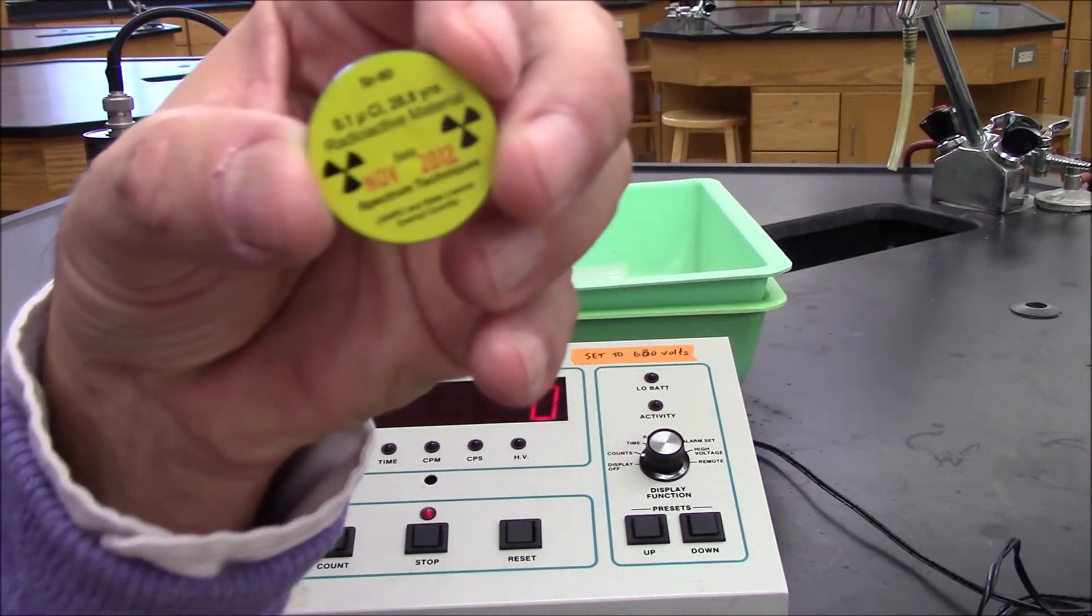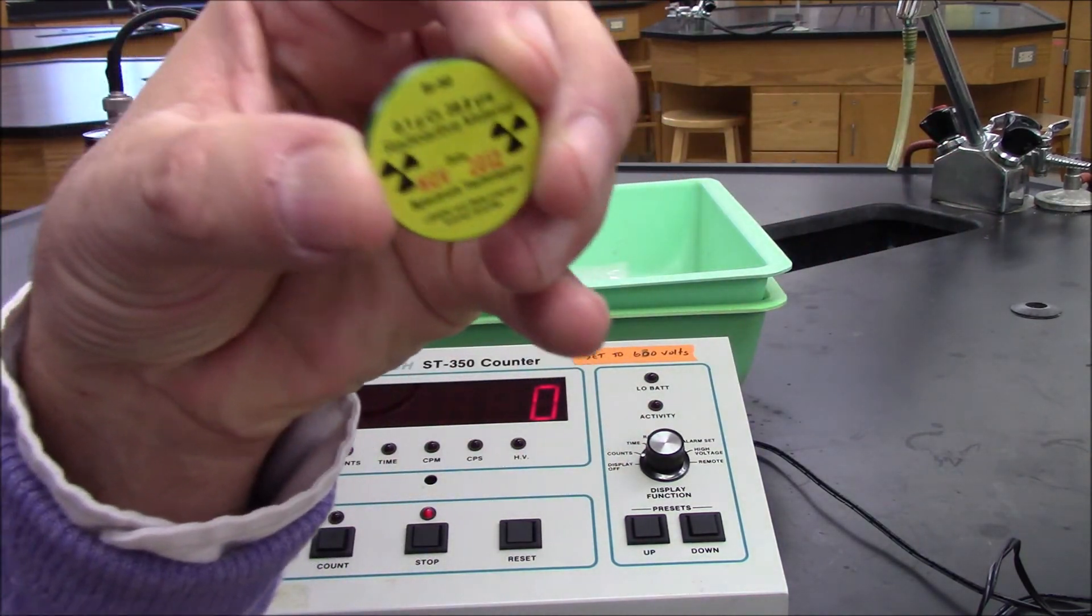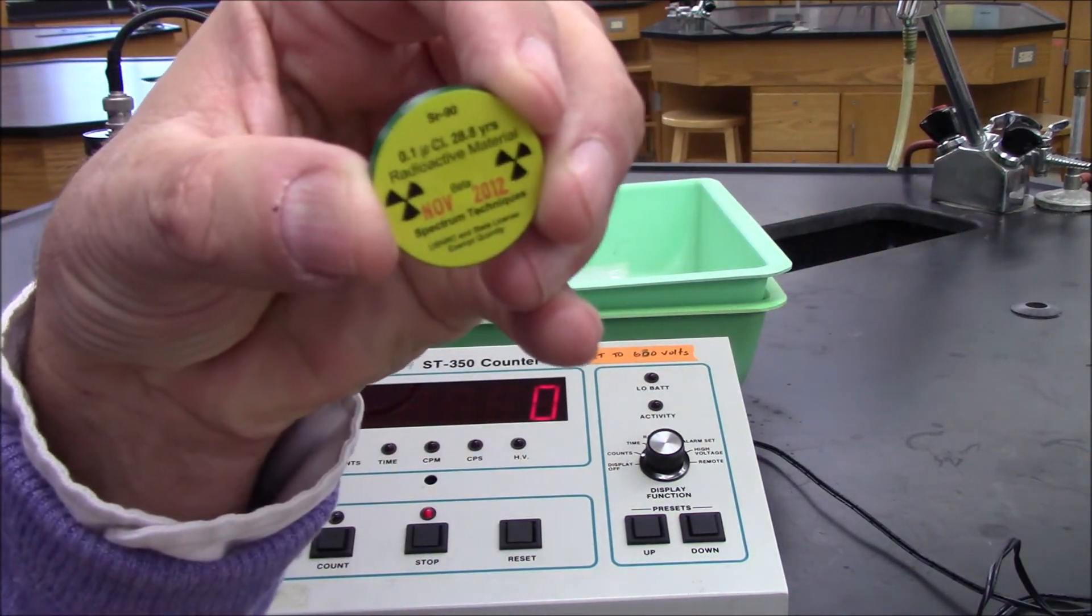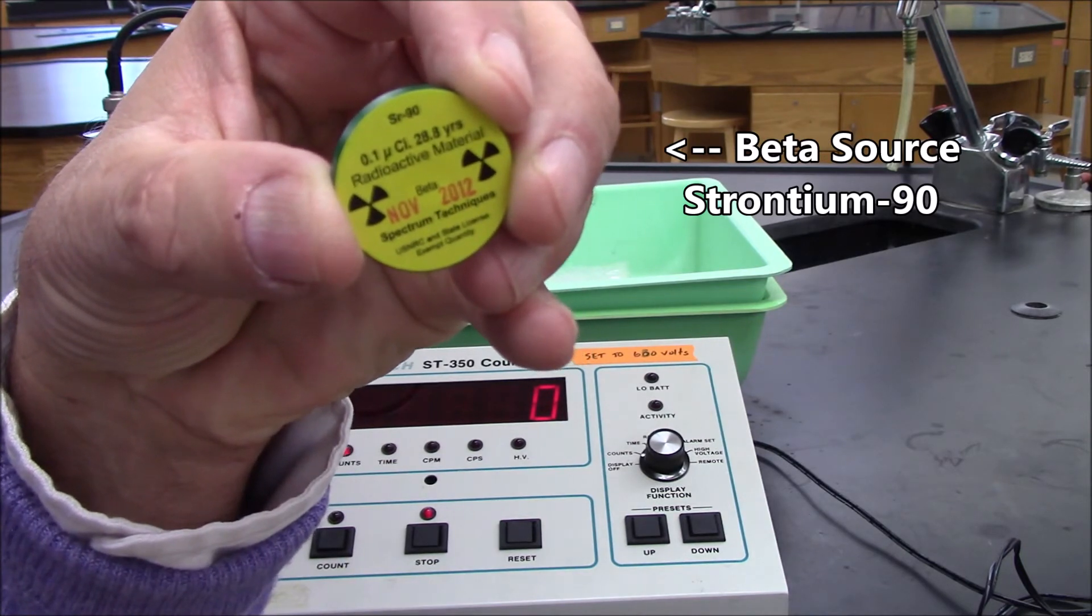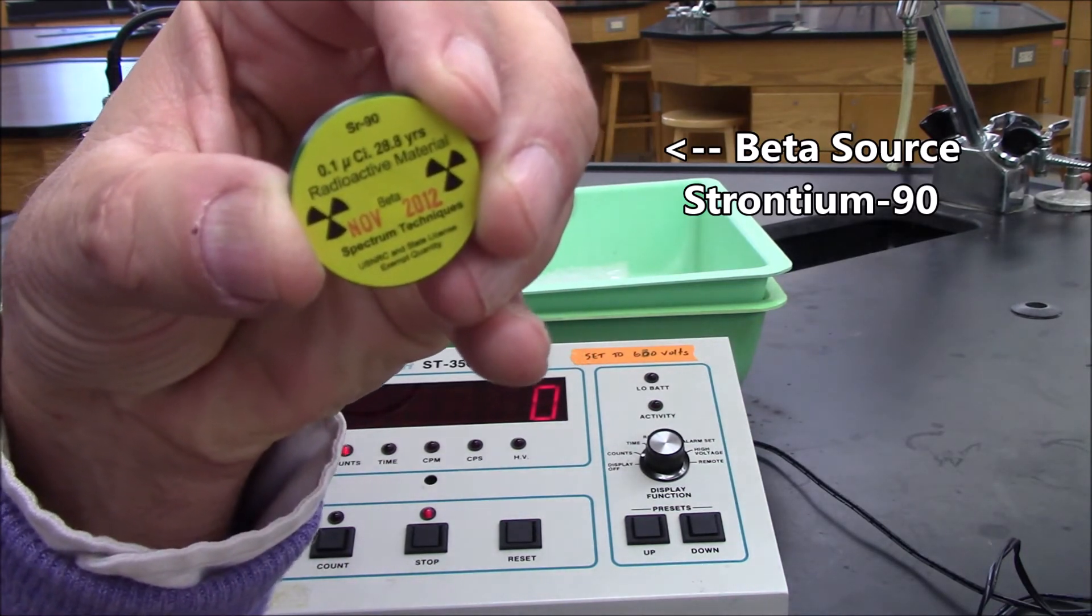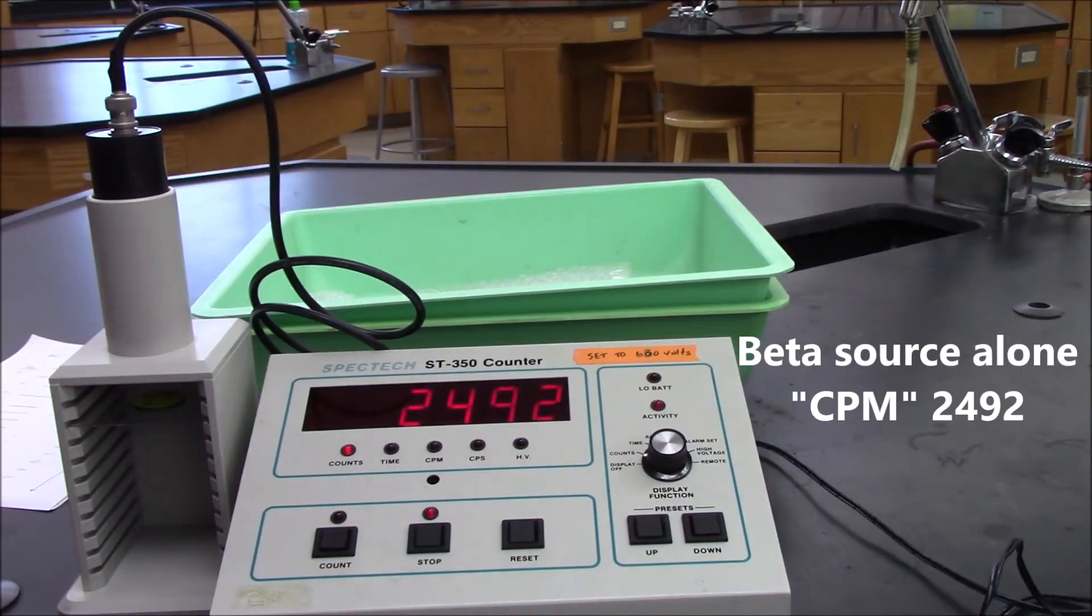Here's my beta source. This is strontium-90. I'm going to put it in. We're going to count for one minute and see what we get. So there's our count from the beta source alone, 2,492 counts per minute. We'll subtract the background radiation.